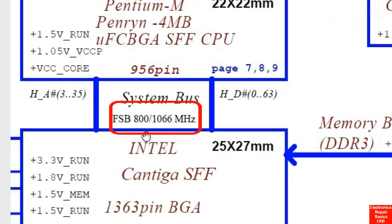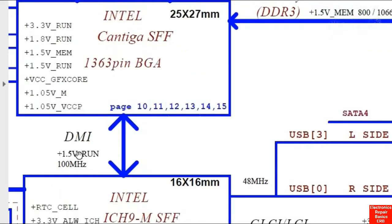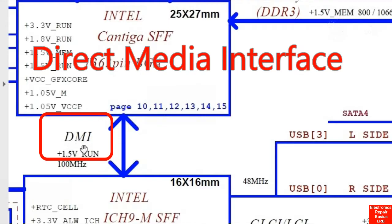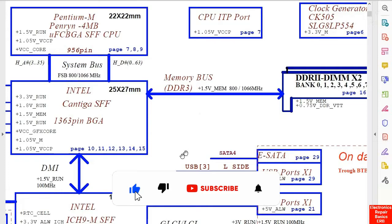Here we have 800–1066 MHz as the FSB frequency — note that this schematic is for a different laptop. Here we also have the DMI, or direct media interface, the bus that connects the north bridge to the south bridge, with a speed of 100 MHz. The FSB speed is always greater than the DMI speed.